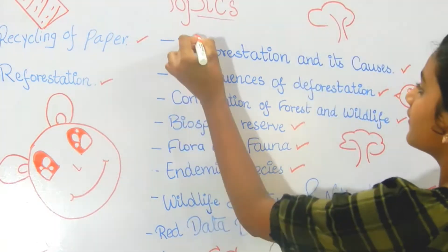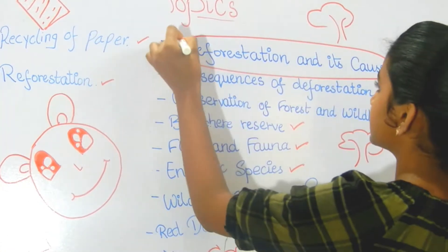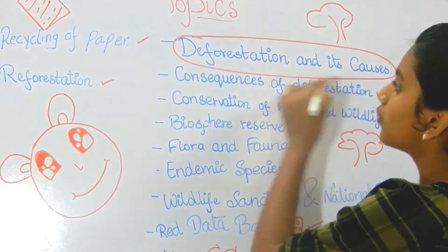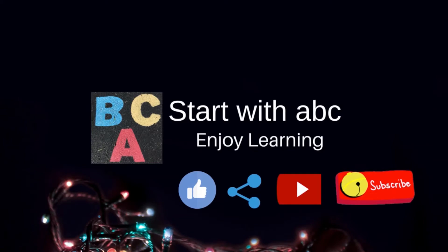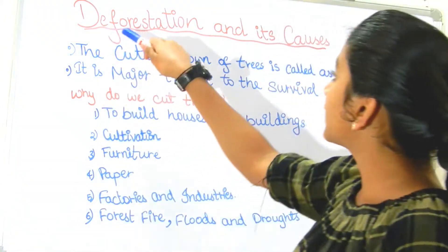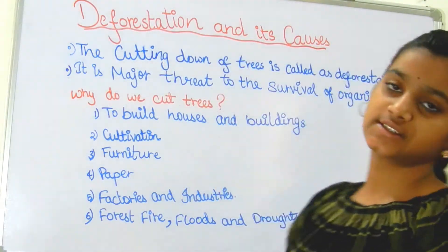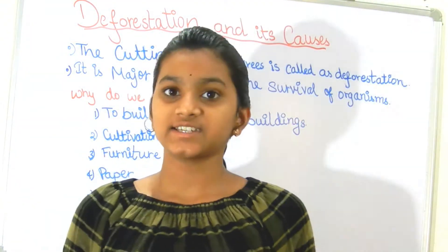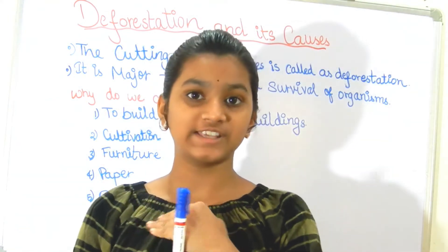So let us start. Our first topic is deforestation and its causes. We are going to learn what deforestation is and its causes deeply. As we have discussed previously, deforestation means the cutting down of trees.